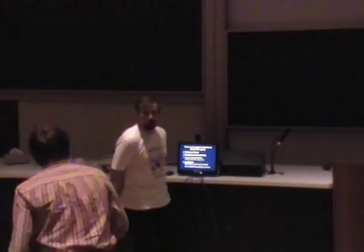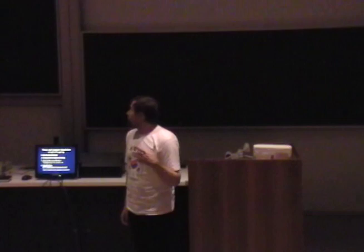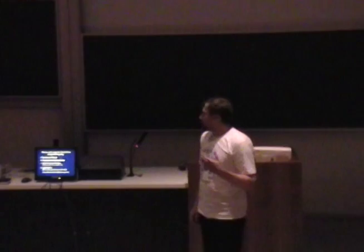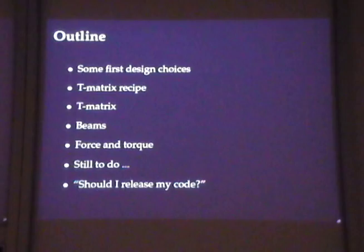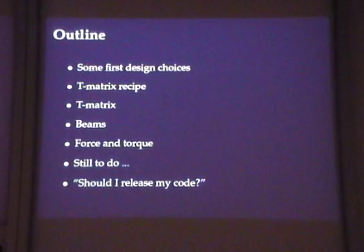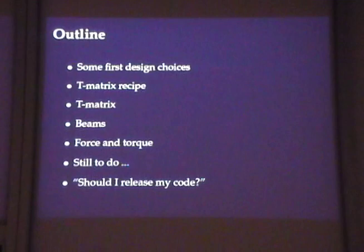Yesterday was mainly an introduction to the theory — why we have the momentum of waves, some of the scattering theory. Today I want to talk about how we can put some of this together into computer simulations and what we can do with it. For the first lecture today we'll discuss our computer code, briefly cover our design choices, repeat the recipe from yesterday, then go through how some of these are implemented. Of course it's not complete, so I'll talk about the things we still need to do.